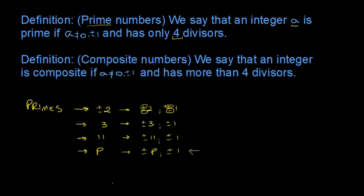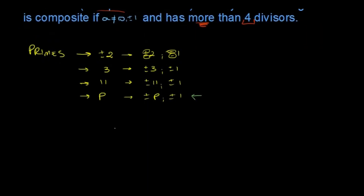Then we define composite numbers as those which aren't prime. So an integral, a, is composite if it's not 0 or ±1, and it has more than 4 divisors. For example, 4 has the divisors ±4 and ±1, but it also has ±2.